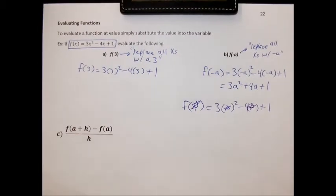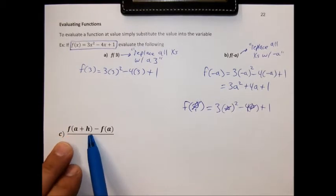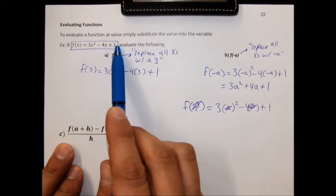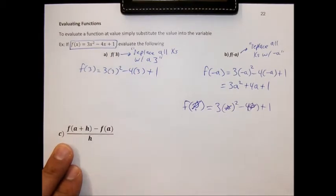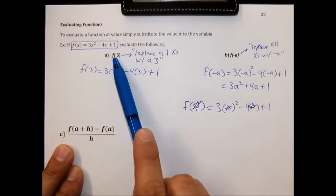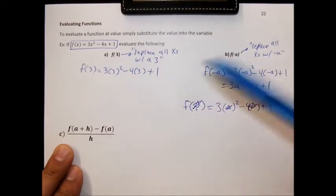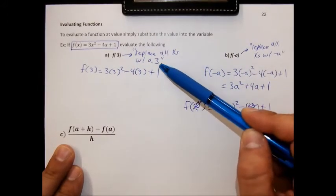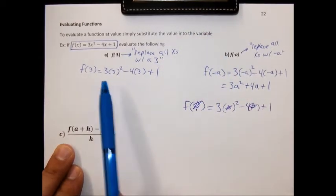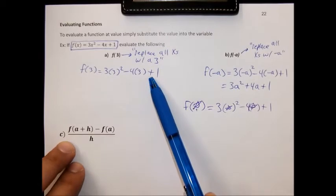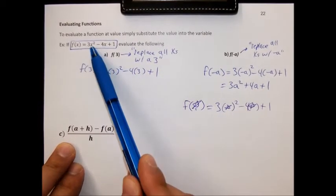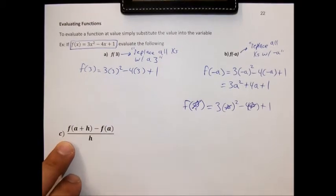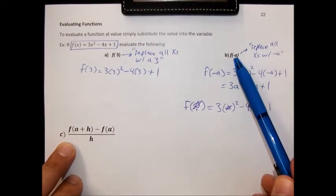We started with a couple of basic examples to get our heads around the notation before we move on to something more complicated. We're talking about the function 3x squared minus 4x plus 1. When you see a number inside parentheses next to f — like f of 3 — we take out all the x's and replace them with a 3. The point is not even to simplify; I just want you to see that we took out the x and put in a 3.